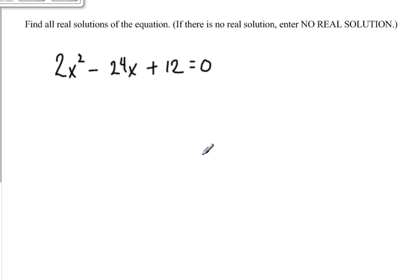All right, we're going to solve this problem here. It says find all real solutions of the equation. If there is no real solution, enter no real solution. So we have 2x squared minus 24x plus 12 equals 0.